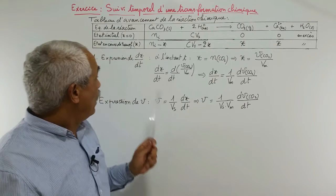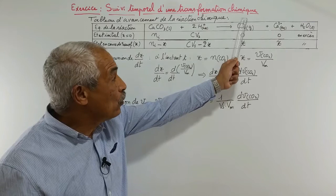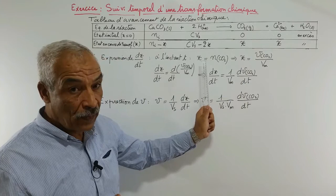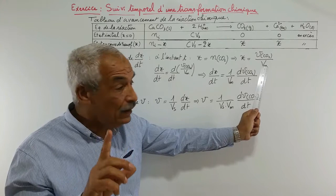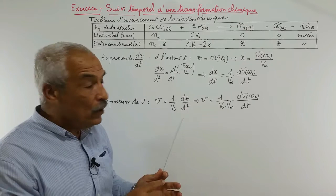Pour déterminer l'expression de dx/dt, je dois exprimer dx/dt en fonction du volume du CO2. Dans la colonne CO2 du tableau, à l'instant t, la quantité de matière de CO2 est égale à x. Donc x = V(CO2) / Vm, puisque Vm est le volume molaire des gaz, qui est une constante. En dérivant par rapport au temps : dx/dt = (1/Vm) × d(V(CO2))/dt.